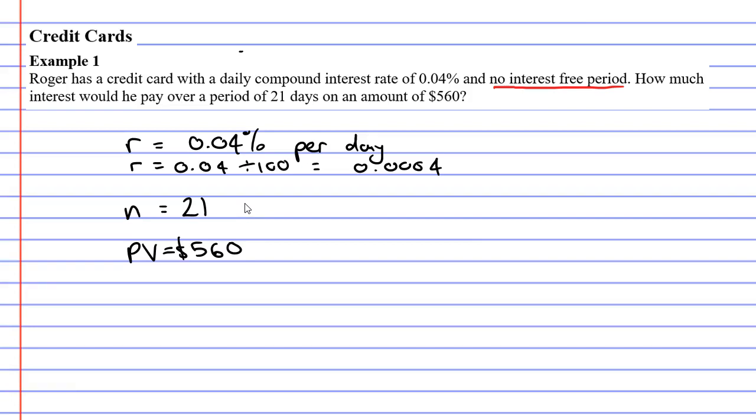Now if we go back to the question you'll notice this word compound, meaning we're using compound interest. So we need to bring up our compound interest formula: future value equals present value times bracket 1 plus r to the power of n.